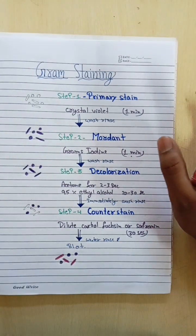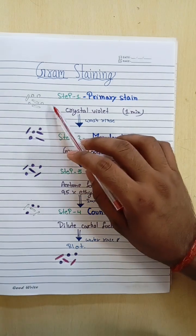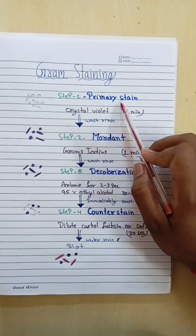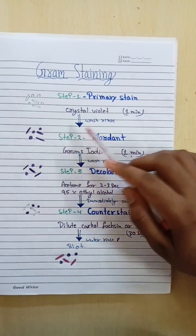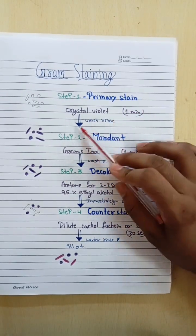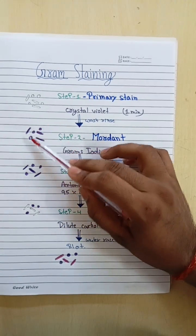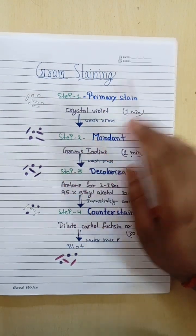These are the steps of gram staining that we commonly use in microbiology department. Step first is primary stain crystal violet. We have to keep it for one minute then after that we wash it. Second step, now if we see, all bacteria and cocci will be purple violet in color.